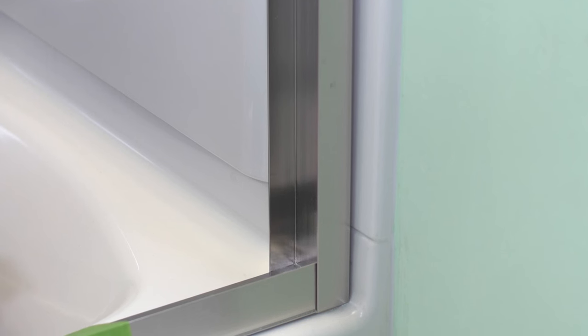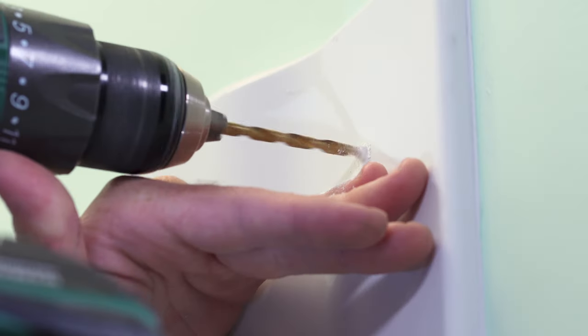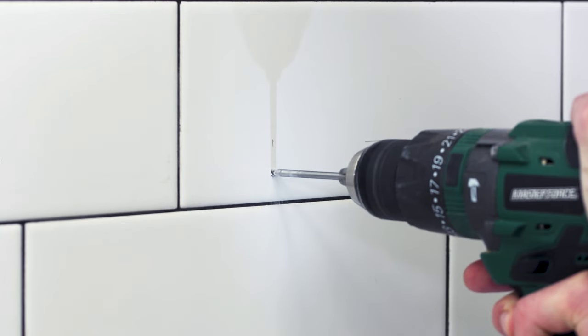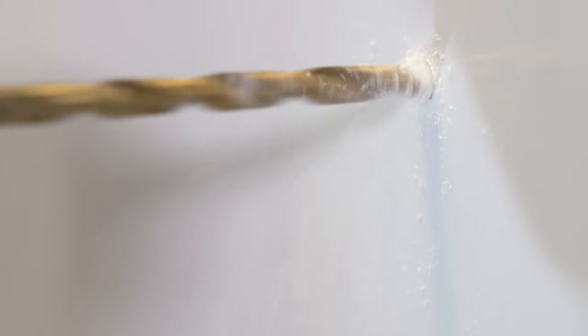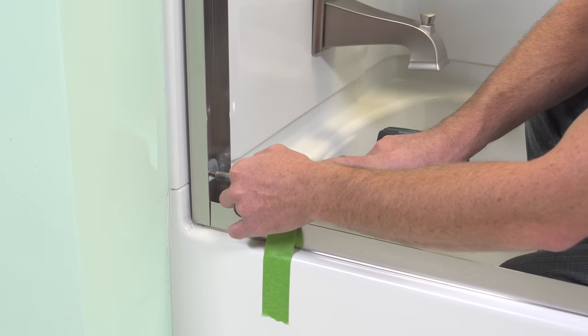Position the two wall jams into the bottom track and make sure they are vertical with a level. Mark the fastening holes and drill into the wall. For ceramic tile, use a 1/4 inch ceramic and glass bit and for other materials use a 1/8 inch drill bit. Install the wall anchors and fasten the wall jams with the provided screws.